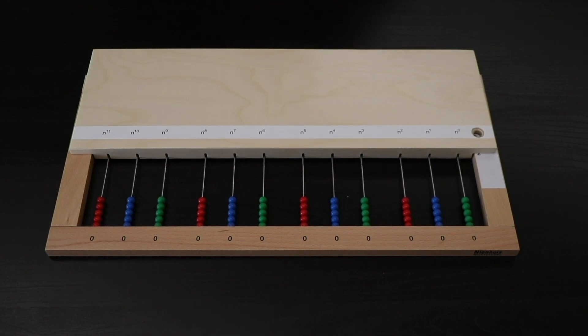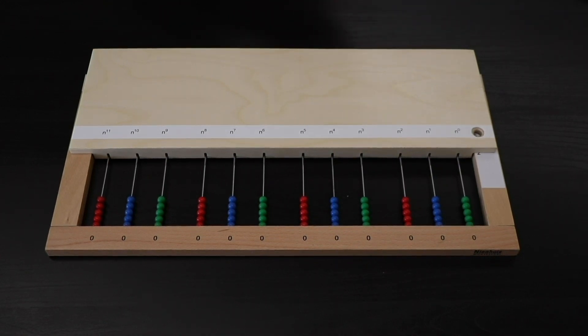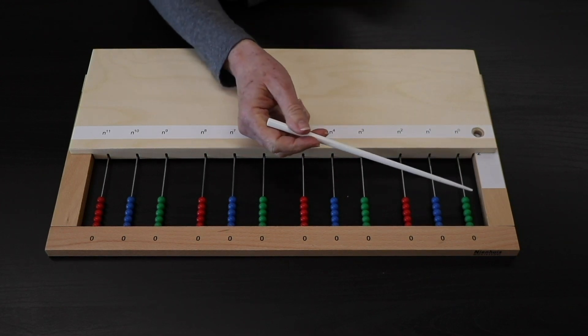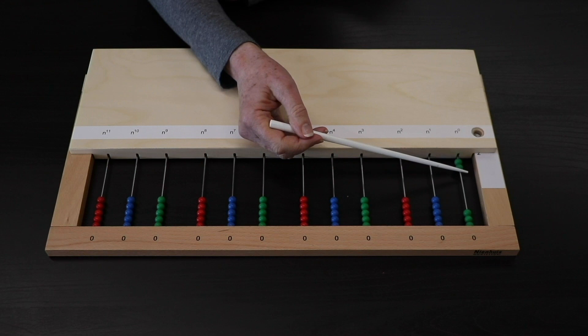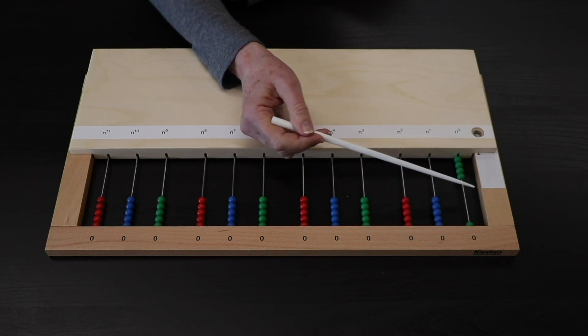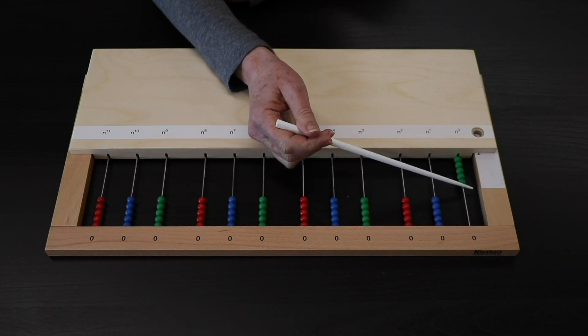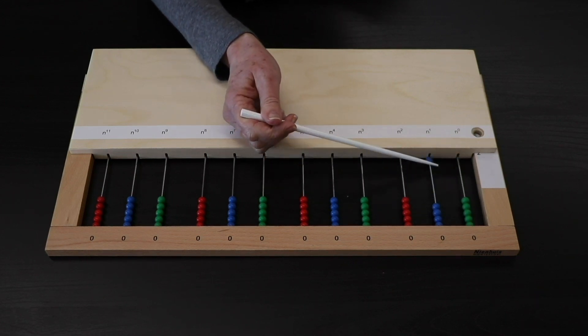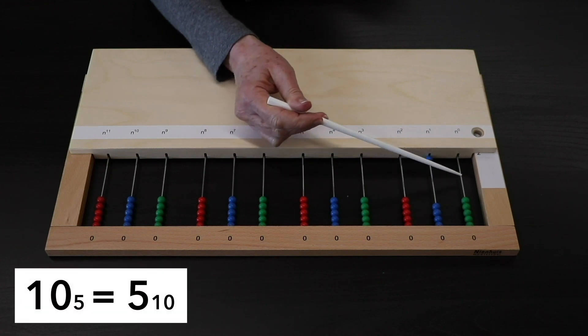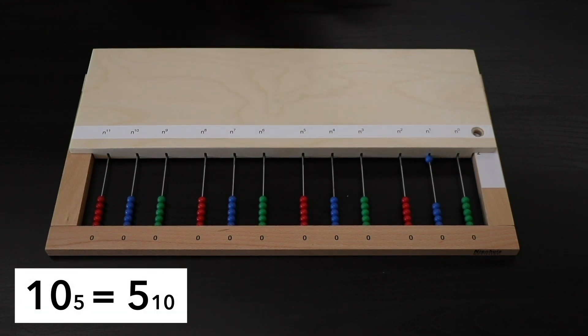This bead frame allows the children to count 1 in base 5, 2 in base 5, 3 in base 5, 4 in base 5. If I have 5 I need to exchange, so I now have 1, 0, base 5.